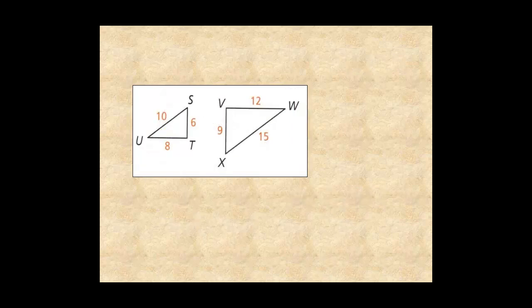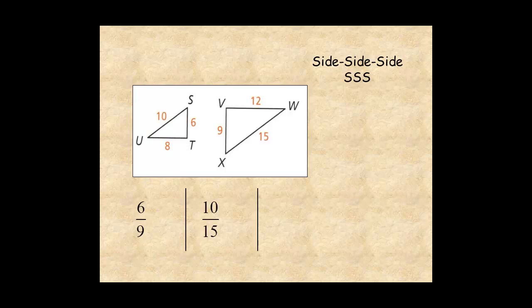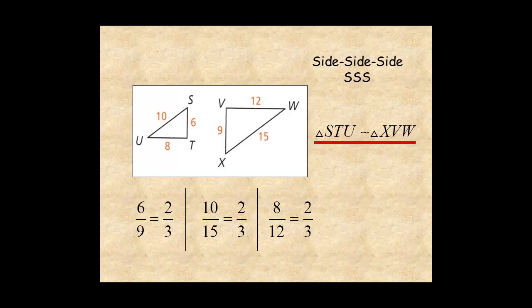The second method is side-side-side similarity. If the corresponding sides of two triangles are proportional, then the triangles are similar. In this diagram, write the ratio of the shortest sides, the longest sides, and the remaining sides. You can see that the ratios are equal. So the triangles are similar by side-side-side similarity.